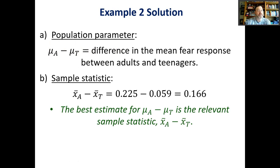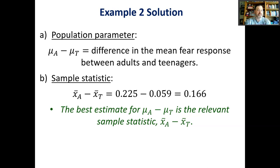The first two examples are similar in many ways but different in others. The first is an experiment; the second is an observational study. The first had one categorical variable; the second has one quantitative and one categorical. But the way we break the problems down is the same — figure out the population parameter, then find the corresponding sample statistic. One note: if it's easier to start with the sample statistic and work backwards to the parameter, that's totally fine.